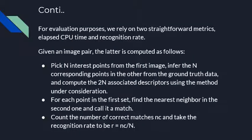For evaluation, the paper relies on elapsed time and recognition rate. The recognition rate is computed as follows: pick an interest point from the first image, find corresponding endpoints in the paired image, and compute the associated descriptor. For each point in the first image, find the corresponding nearest neighbor in the next image. Count the number of correct matches. Therefore, recognition rate equals the number of correct matches over the number of interest points.